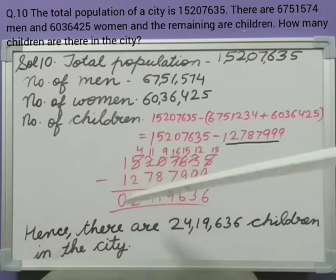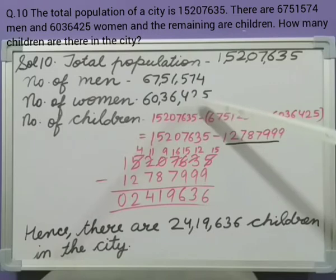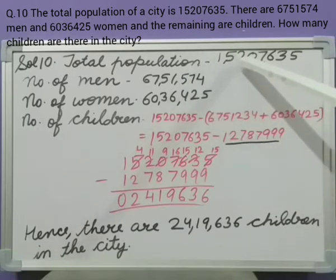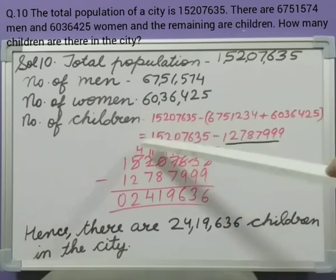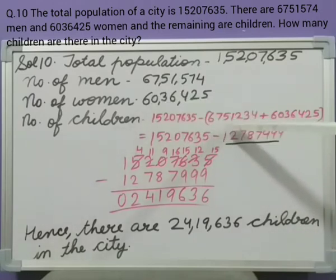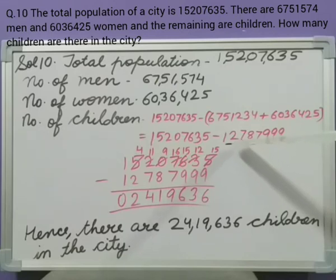This question has two steps. First, we need to find out the total of men and women, so that it can be subtracted from the total population. If we subtract men and women from the total population, we will automatically get the number of children. So, number of children equals total population minus the sum of men and women. After adding them, we got 1,27,87,999.